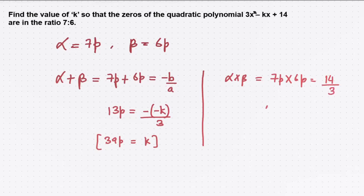So if we use 7p times 6p, that's 42p² = 14/3. Now simplify this equation.